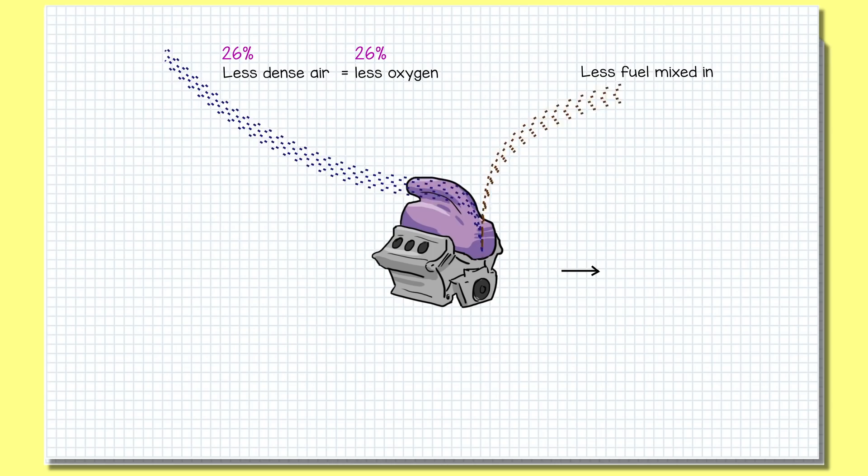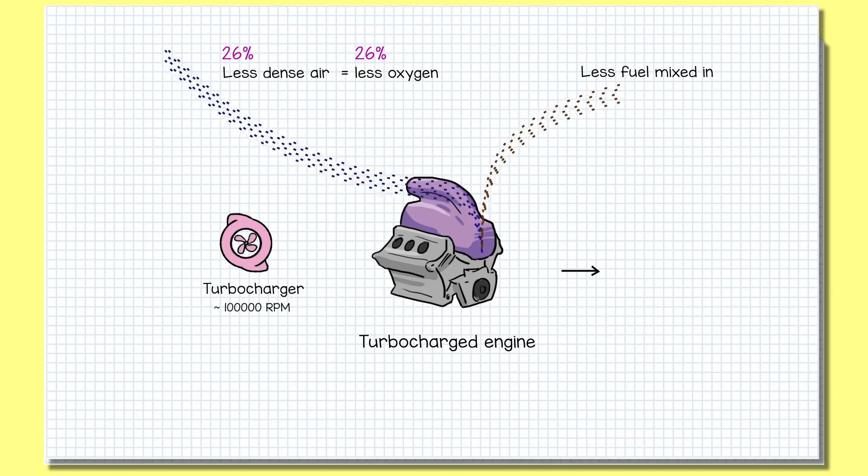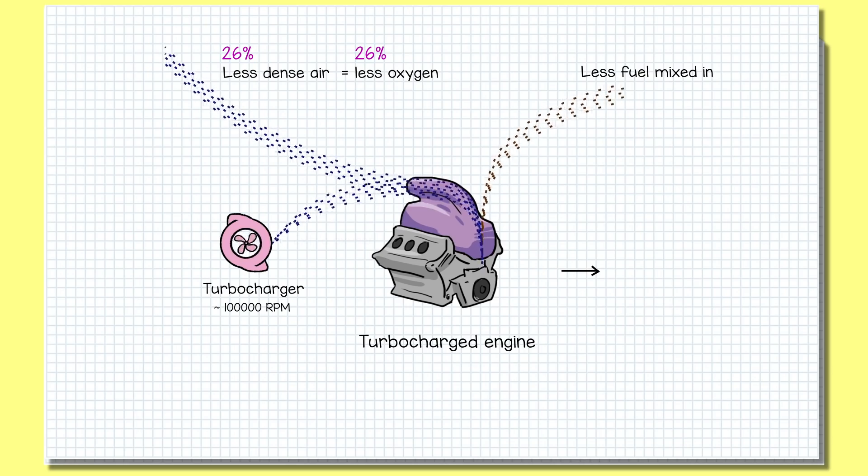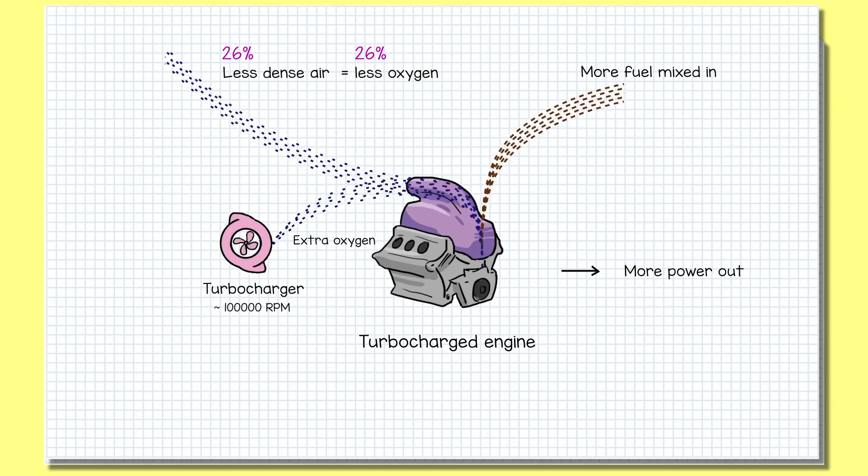But we don't have normally aspirated engines anymore, we have turbocharged engines. And what turbos do is spin incredibly fast, normally about eight times faster than the engine itself, to pump air into the engine. And the more air you pump in, the more fuel you can pump in, and the more power you can get out of the engine. At these high altitudes, the teams have to really ramp up the turbo. It now has to do a lot more work to try and get as much oxygen into the engine as it would normally have.